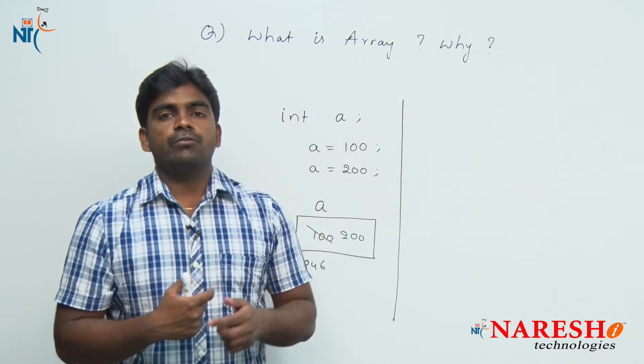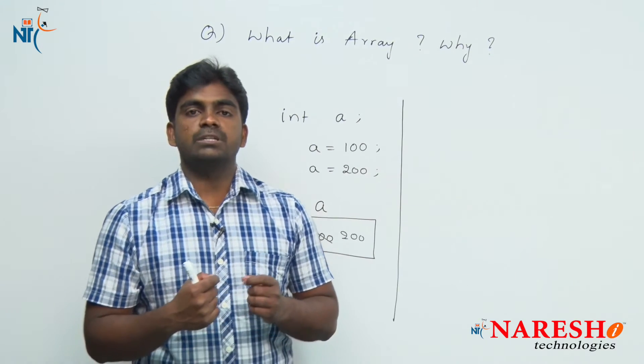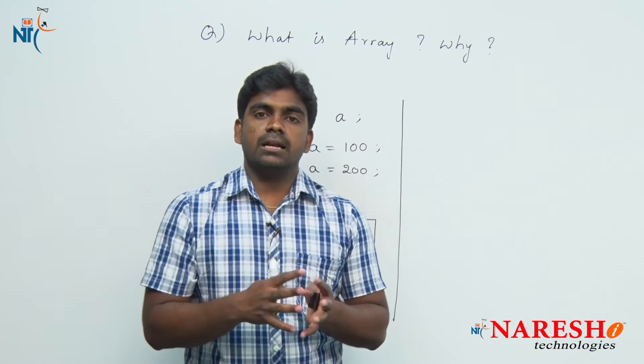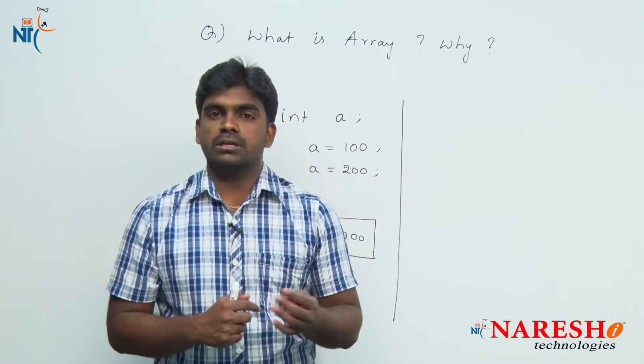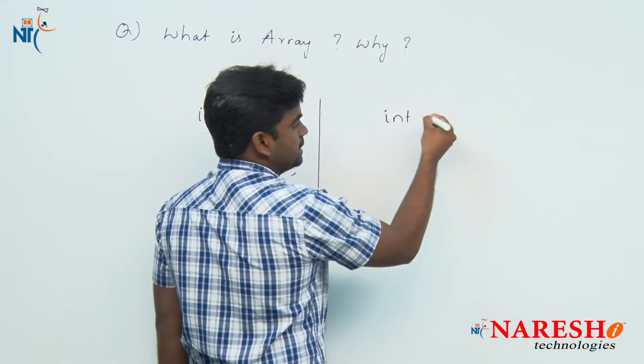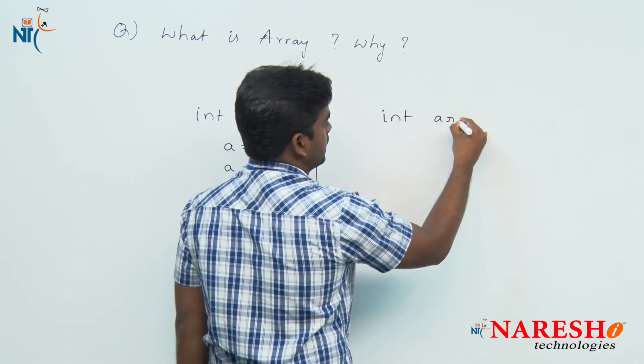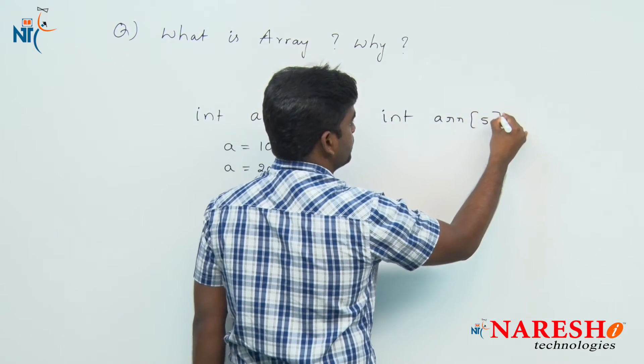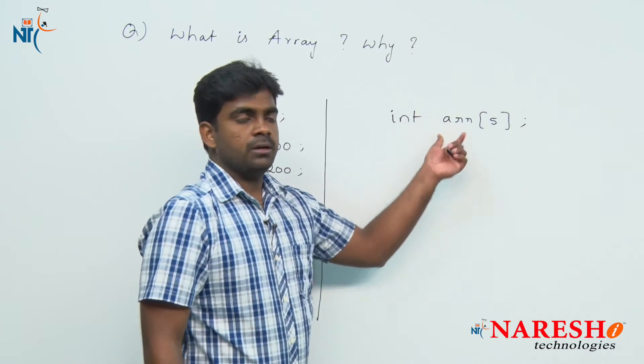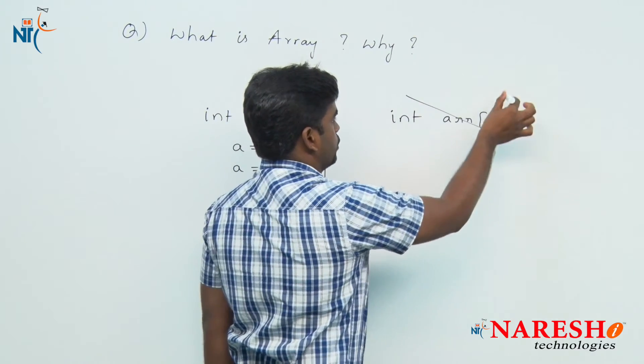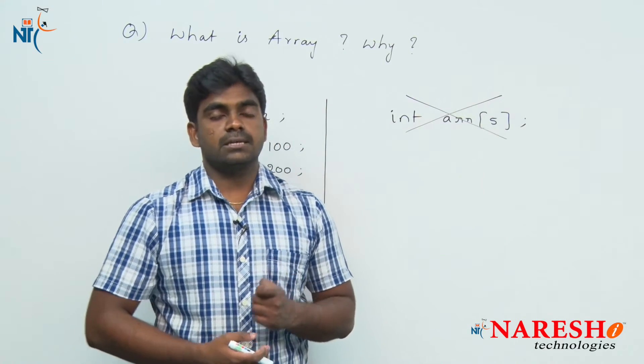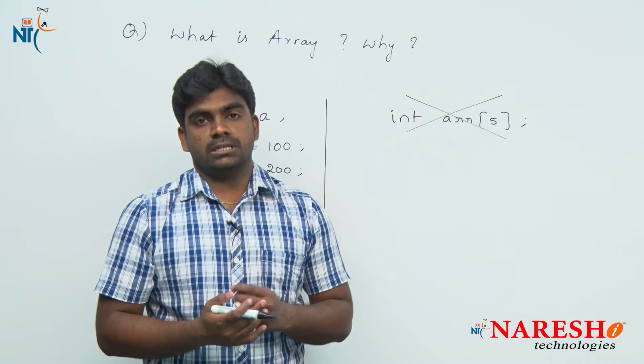In Java, how do we declare an array variable? Generally in other languages like C or C++, we declare integer array by directly specifying the size. But in Java, this declaration is not allowed. In Java, arrays are objects.